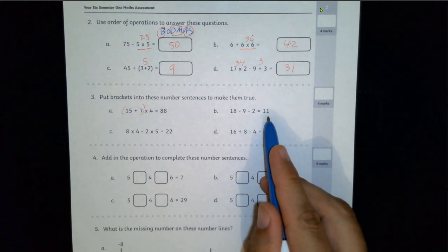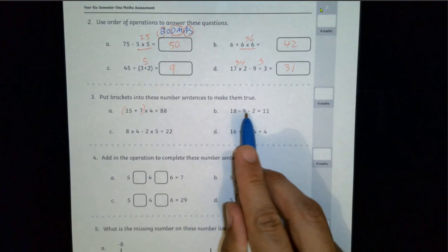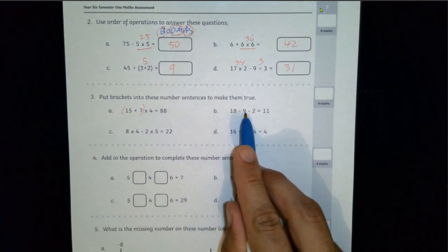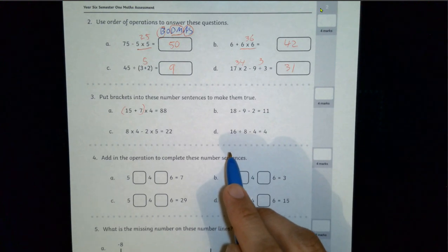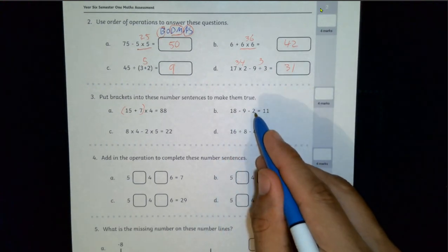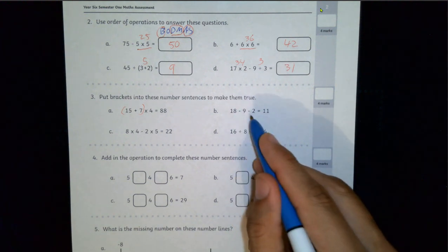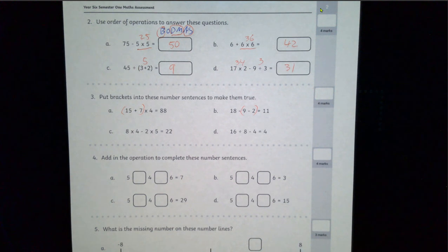For B, I need to get 11. So if I put it around the first two numbers, 18 take 9 will give me 9, 9 take 2 won't get me 11. So maybe if I put it around the next two numbers, 9 take 2 is 7, 18 take 7 will get me 11. So it's just a bit of trial and error.